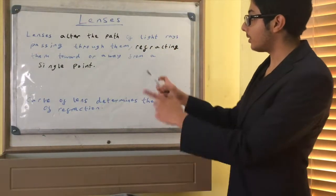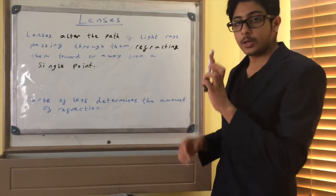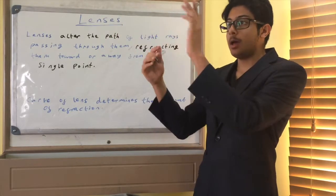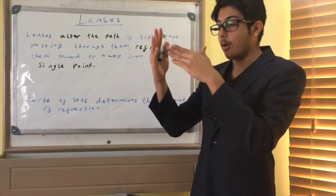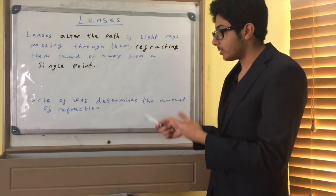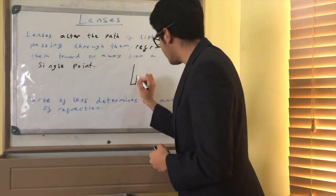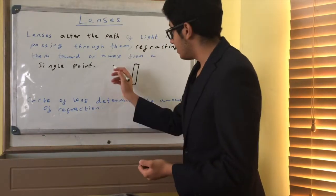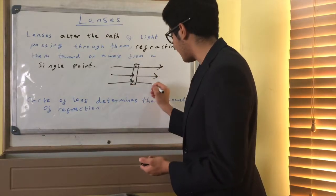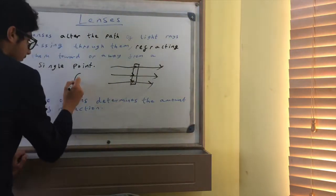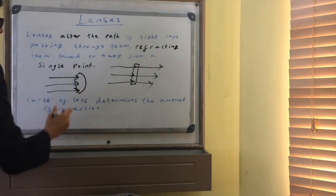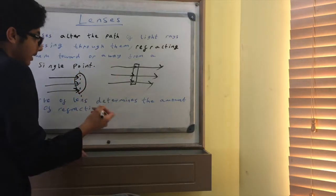I am the awesome tutor and today we're going to be looking at lenses. Lenses alter the path of light as they pass through them, either refracting them away or towards a single point. The curve of the lens determines the amount of refraction. If the lens is not very curved, the light passing through it will not be refracted that much.